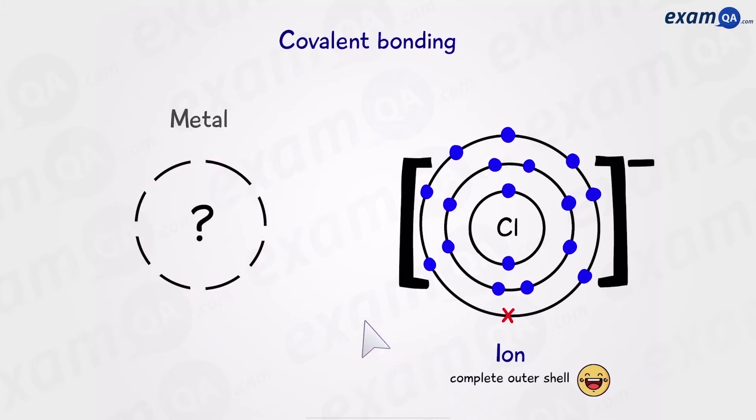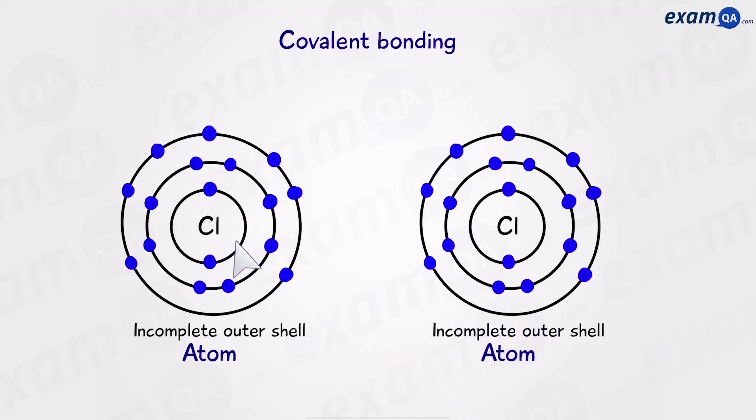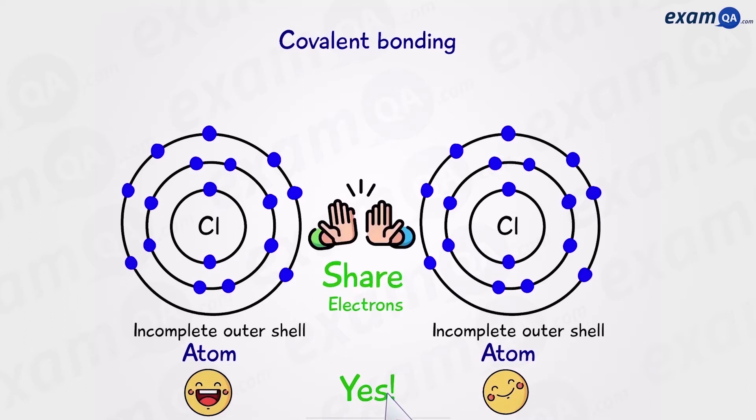However, what if we don't have a metal? What if we have two non-metal chlorine atoms? Would it still be possible to have a full outer shell? The answer is yes. And it's to do with sharing electrons.